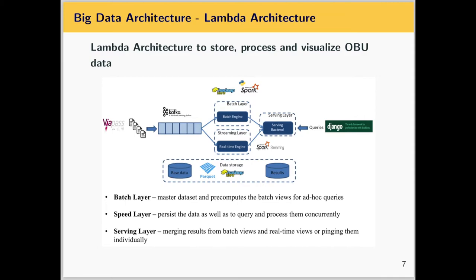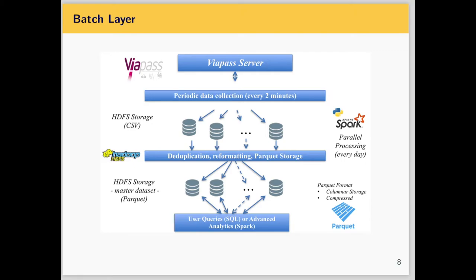The data are collected in Hadoop HDFS and stored in Parquet format for optimal storage and processing. In the batch layer, we collect data from the ViaPass server every two minutes, store the raw data in HDFS, then reformat and save it in Parquet format by running a Spark routine in Python to obtain a final master dataset. On this dataset we can run user queries in SQL or advanced analytics in Spark to gain batch views of the collected OBU data.